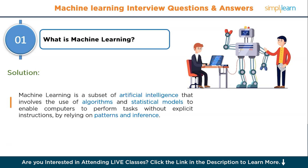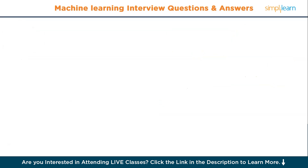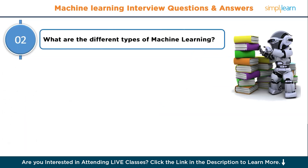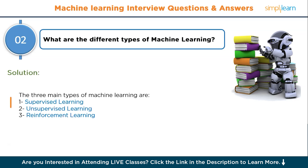Moving to question number two: what are the different types of machine learning? The three main types of machine learning are supervised learning, unsupervised learning, and reinforcement learning.